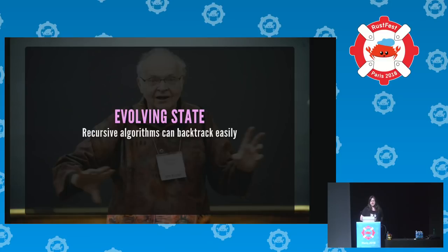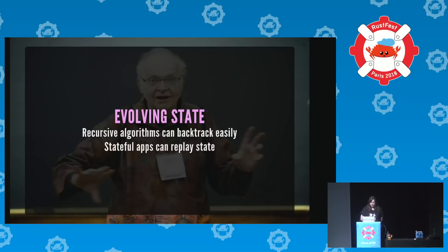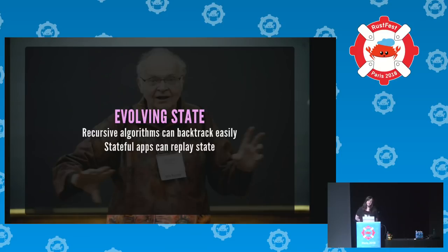Here's an argument that's still valid: evolving state. If you have a recursive algorithm that needs to backtrack, with persistent data structures you don't need to worry about how to backtrack — you just go back to the previous value you still have stored. Likewise with stateful apps like Redux or Elm, the entire state can be stored in a persistent data structure and you can roll back to previous states, keep snapshots, or have a slider through the entire history of application state.